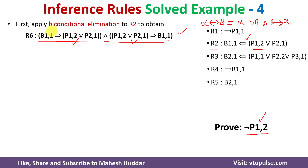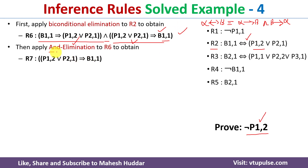If I retain the first clause, we have B11 here, and in R4 we have negation of B11 — we cannot directly apply modus ponens. So I check the second option: (P12 or P21) implies B11. If I apply the contrapositive, B11 moves to the left side and becomes negation of B11, which is the better option.